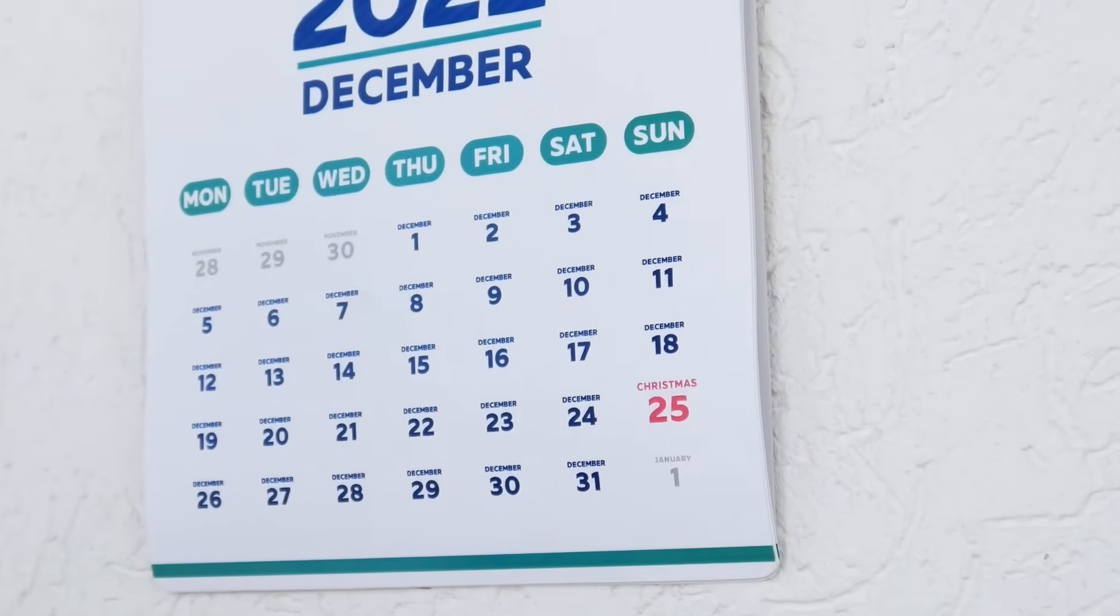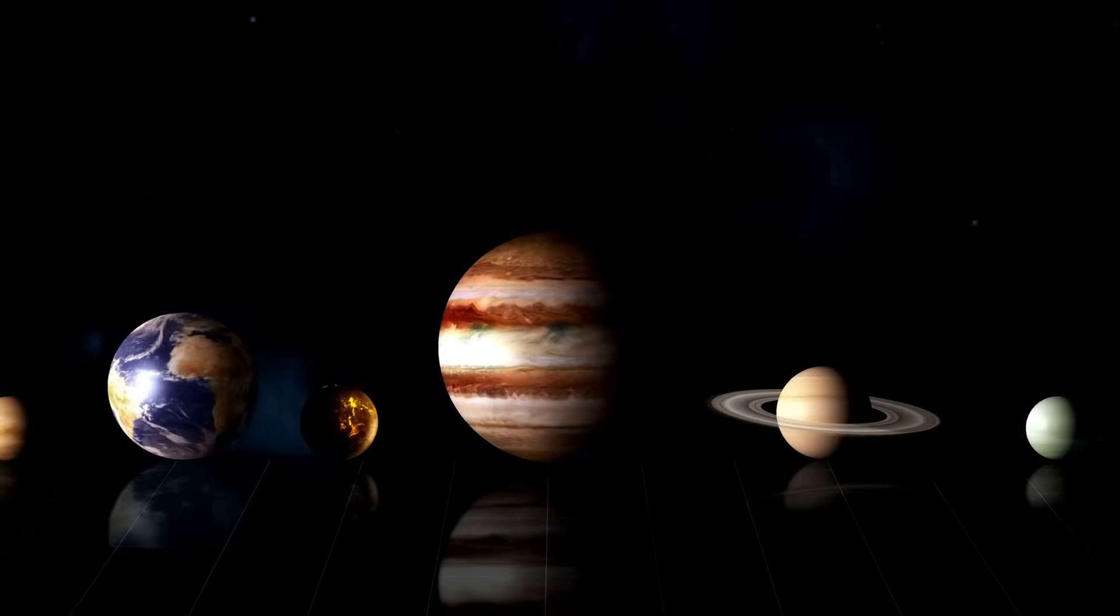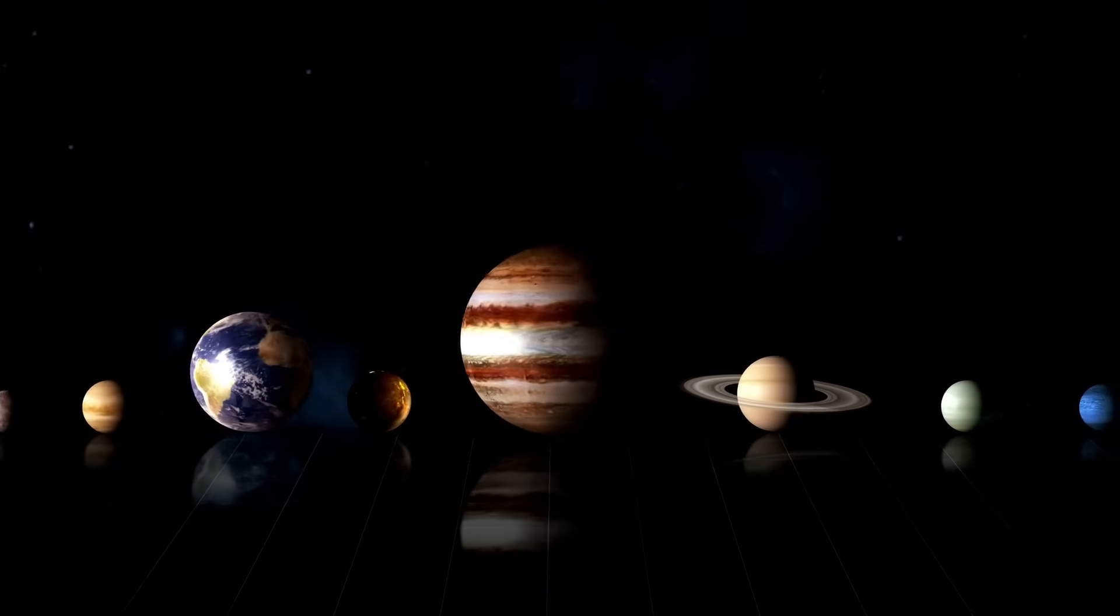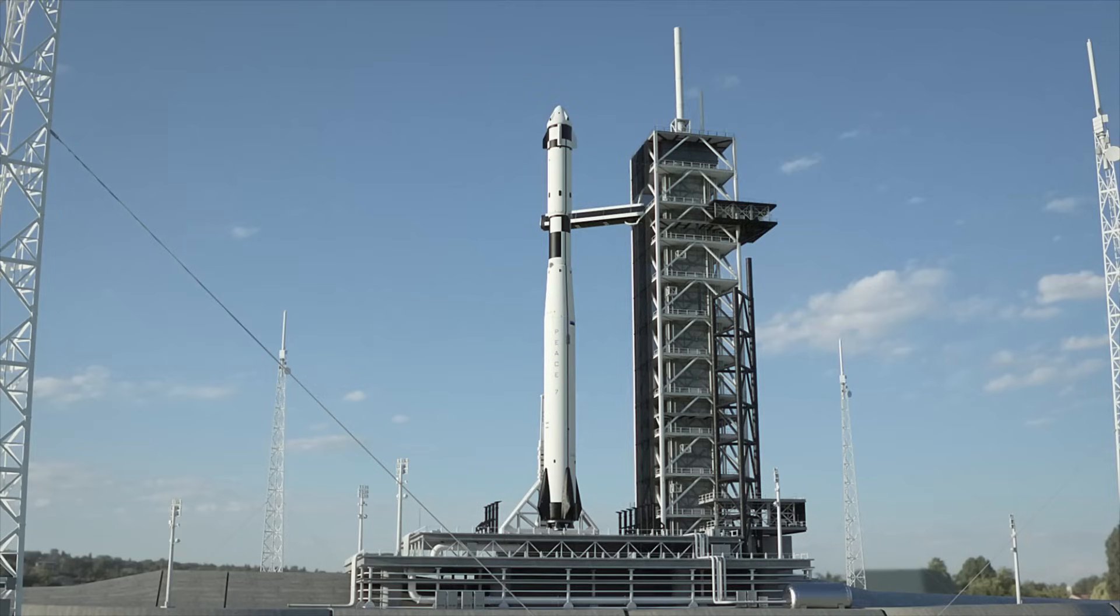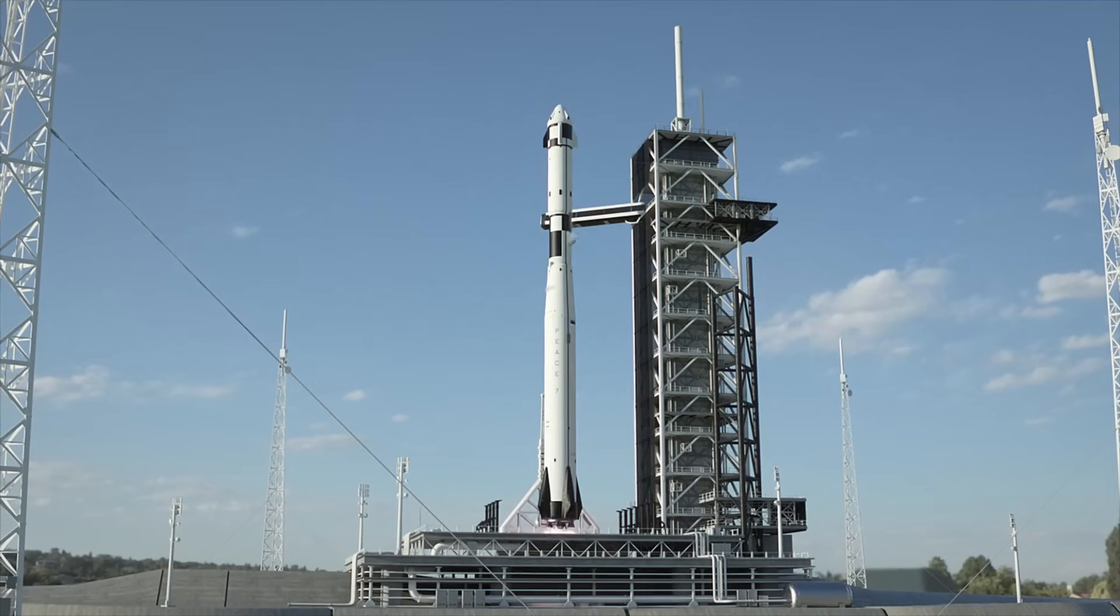The universe is, after all, a place filled with staggering contrasts. We've found planets like Jupiter, whose sheer mass dwarfs many stars, and moons that come close to the size of Earth itself.